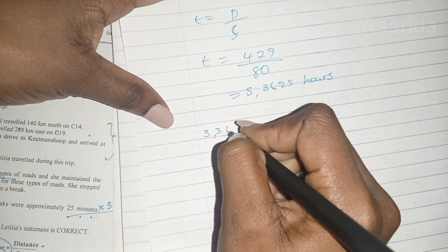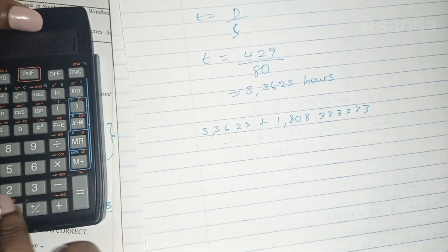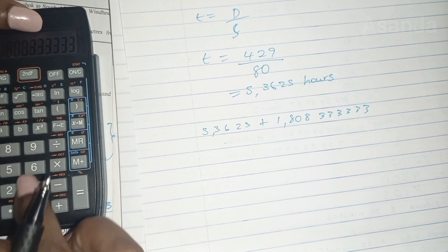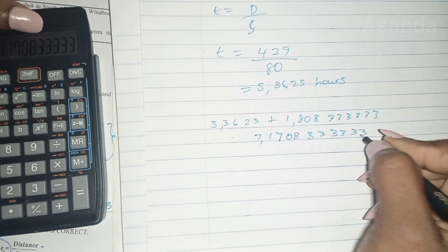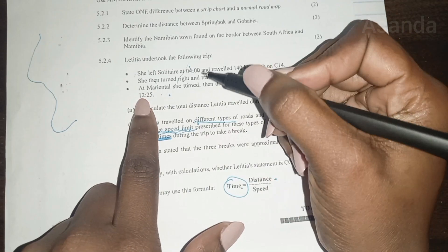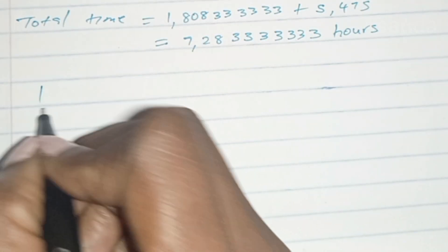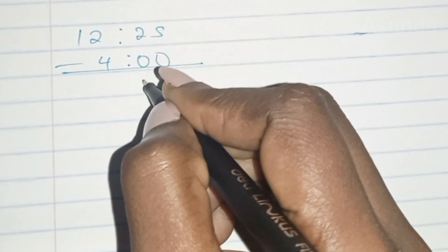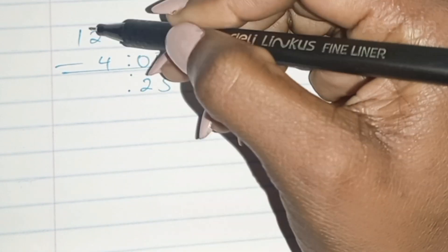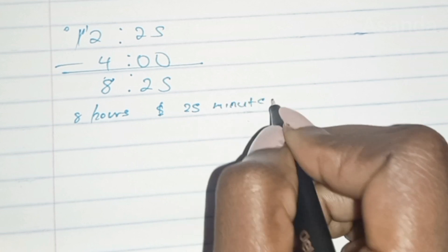Adding the total driving time together: 3.3625 plus 1.80833 plus 1.80833 plus 1.80833 gives us 7.70833 hours total driving time. She drove from 4 in the morning and arrived at 12:25, so the trip duration is 12:25 minus 04:00. That works out to 8 hours and 25 minutes total trip time.